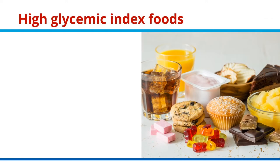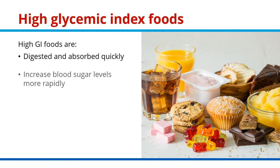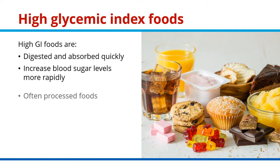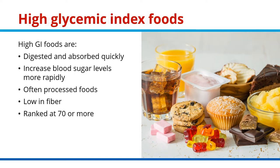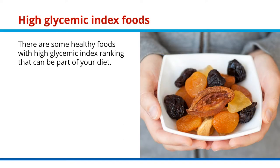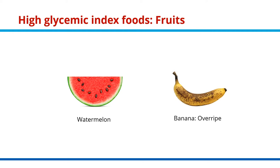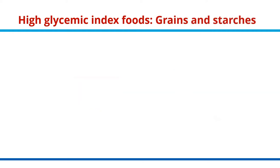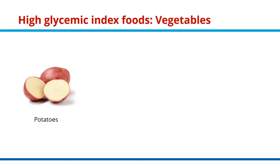High GI foods are digested and absorbed quickly and increase blood sugar levels more rapidly. They are often processed foods that are low in fiber and are ranked at 70 or more on the GI scale. Some healthy foods with a high GI ranking can still be part of your diet, including fruits such as watermelon and overripe bananas, grains and starches such as millet and naan bread, and vegetables such as potatoes, parsnips, and carrots.